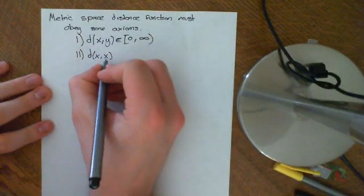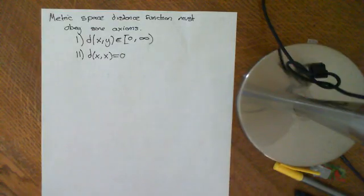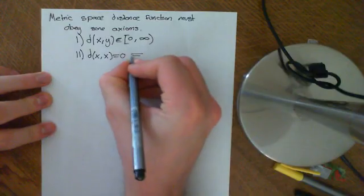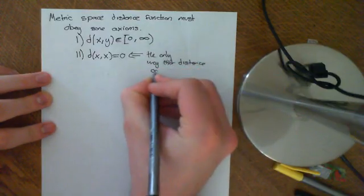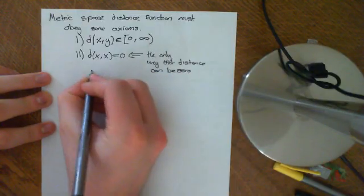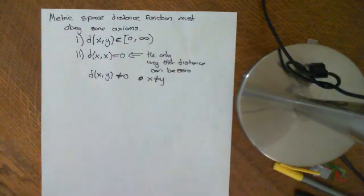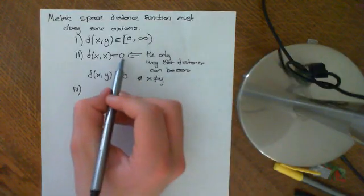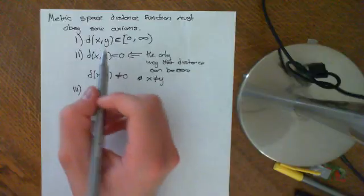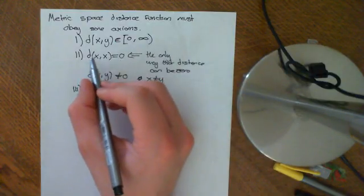Axiom two says d(x, x) equals zero — the distance between an element and itself is zero. That's intuitive, the same as saying the distance between two and two is zero, obviously true in the real numbers. We don't want the distance between a point and itself to be five. And this turns out to be the only way the distance can be zero: d(x, y) not equal to zero if x is not equal to y. So if you have two distinct points, you don't want the distance to be zero. The only way d(x, y) equals zero is if x equals y — it's an if and only if.